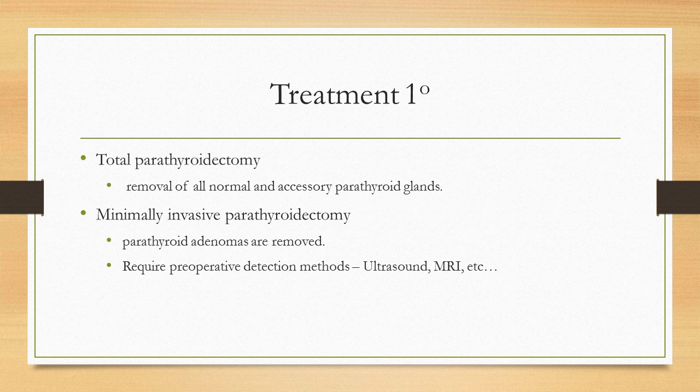Next we'll talk about the treatment of primary hyperparathyroidism. The most common form of treatment is a total parathyroidectomy, which is the removal of all normal and accessory parathyroid glands. However, there is also a minimally invasive parathyroidectomy where the parathyroid adenomas are removed, though this requires preoperative detection methods such as ultrasounds, MRIs, and CT scans.